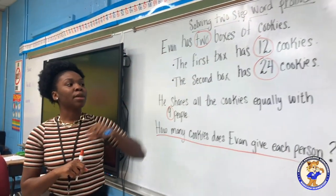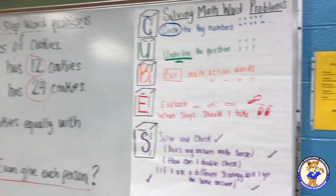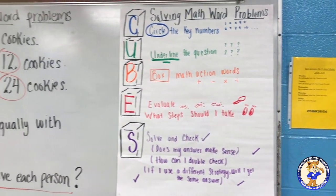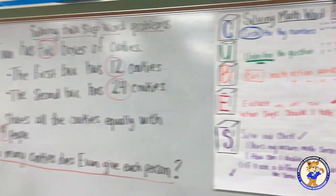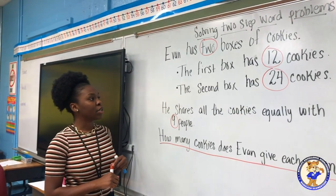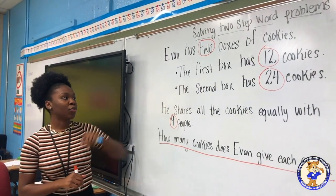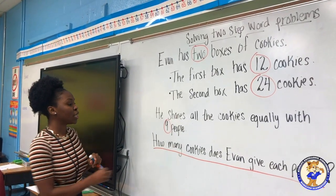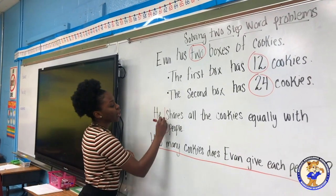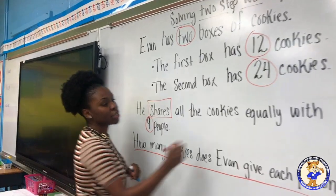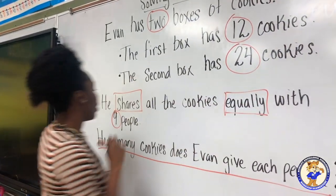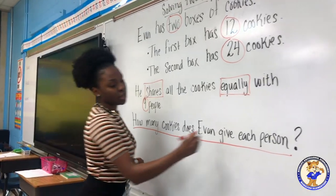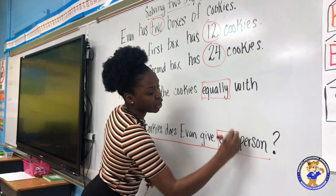The next step is to box math action words. So we're going to reread our problem to pull out our math action words. Evan has two boxes of cookies. The first box has 12 cookies. The second box has 24 cookies. He shares all the cookies equally with nine people. How many cookies does Evan give each person?